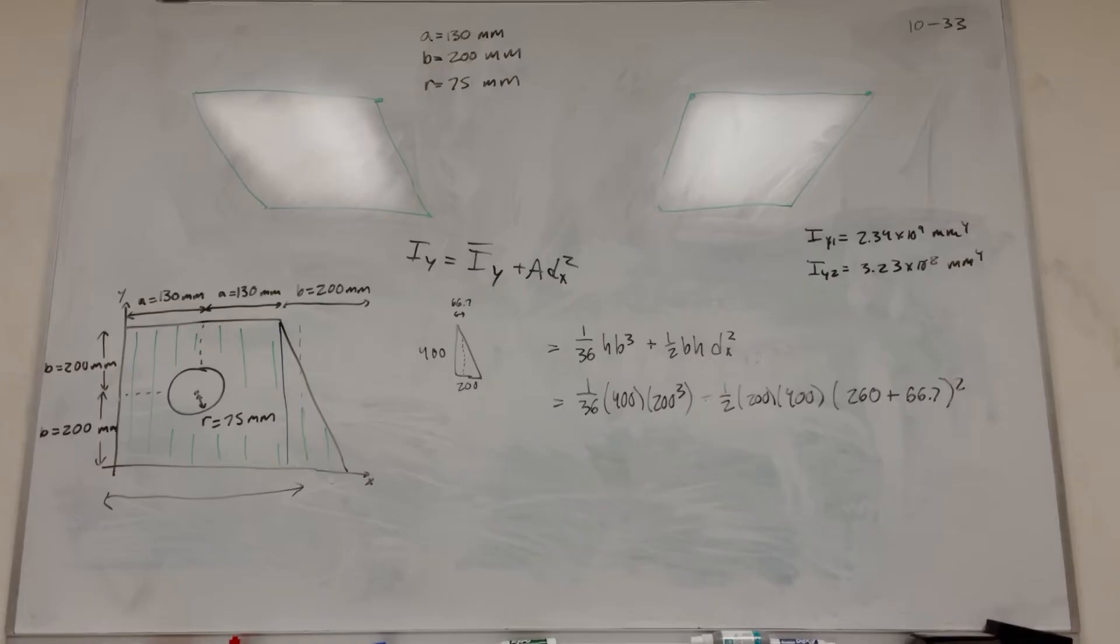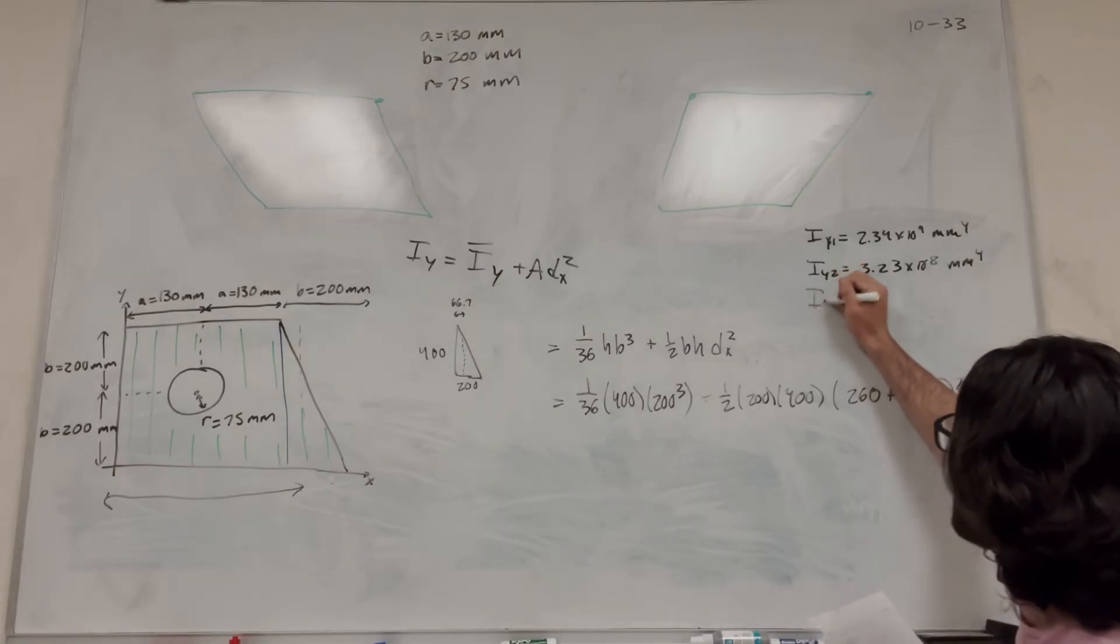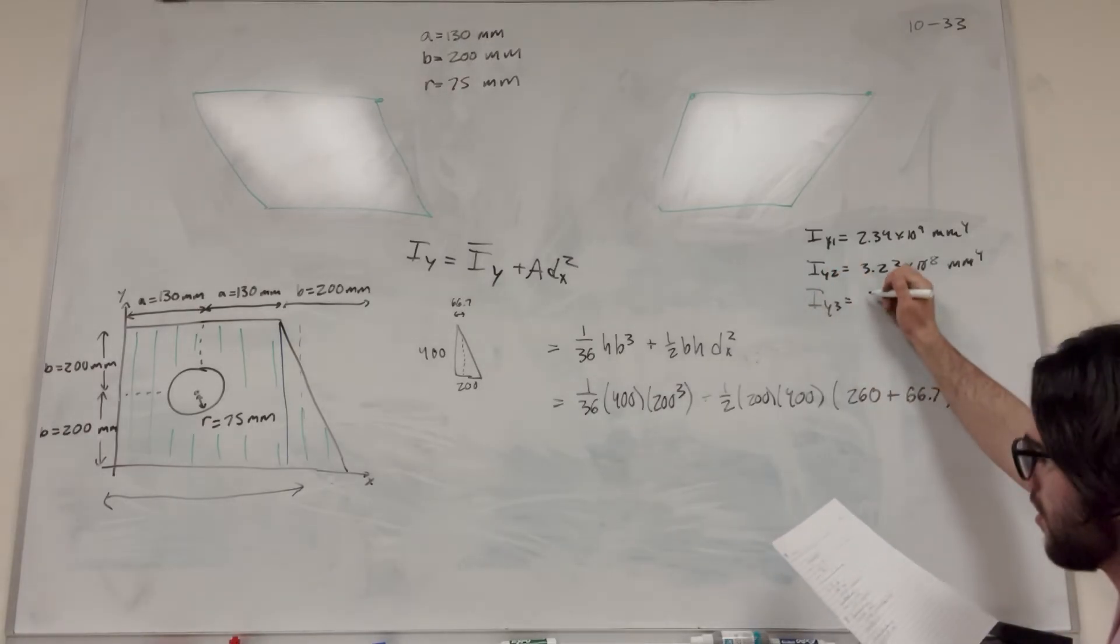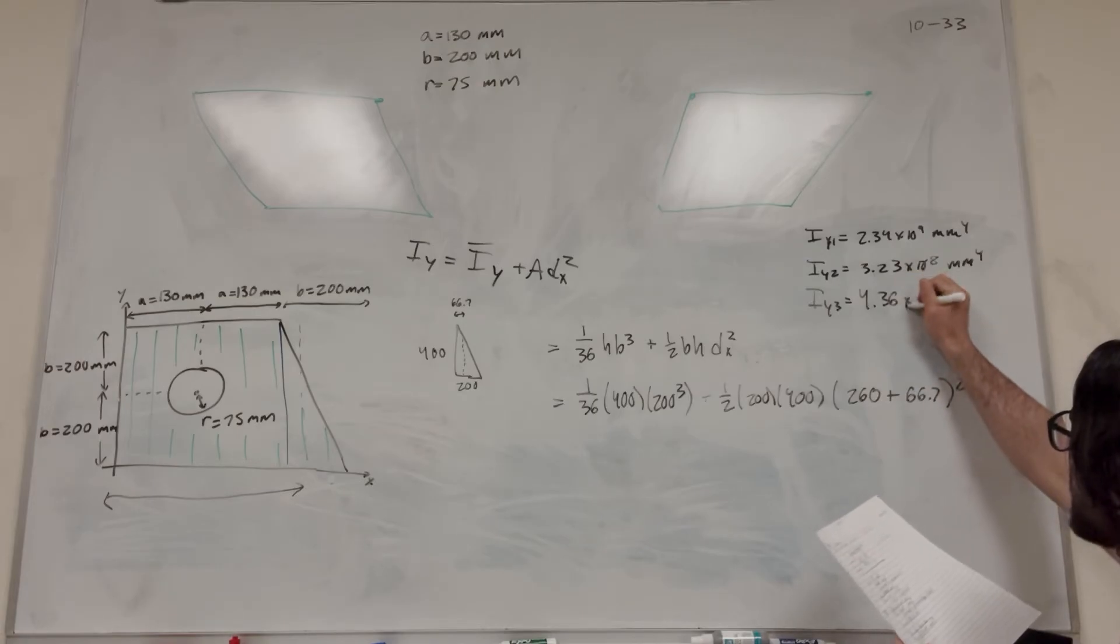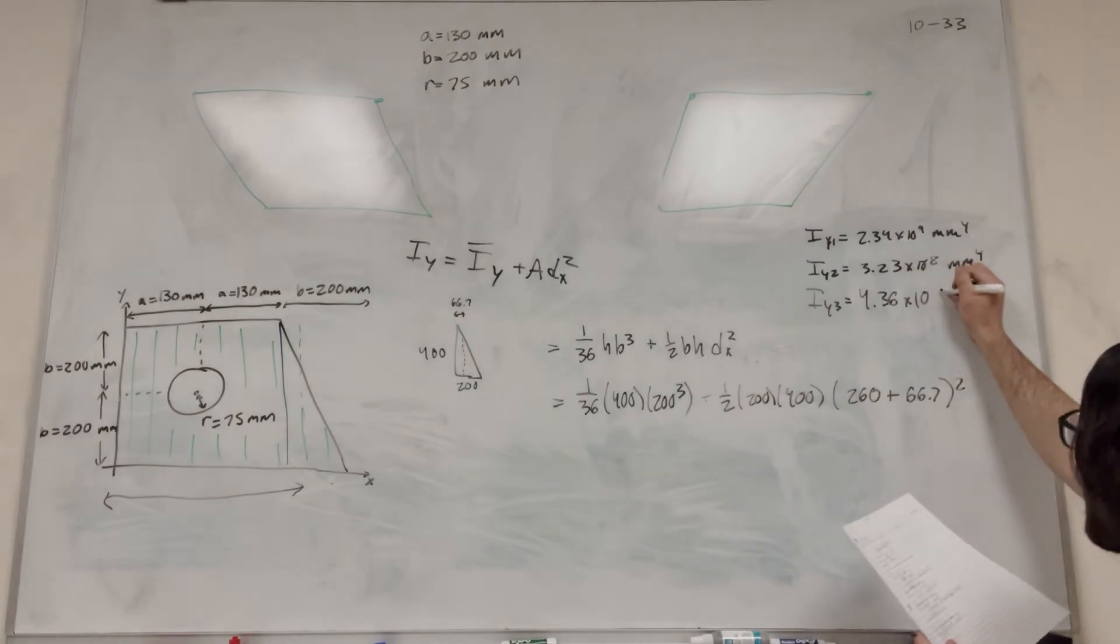Make sure I've got everything here. Looks like I did. So then you do the math on this. I_y of 3 is equal to 4.36 times 10 to the 9th.